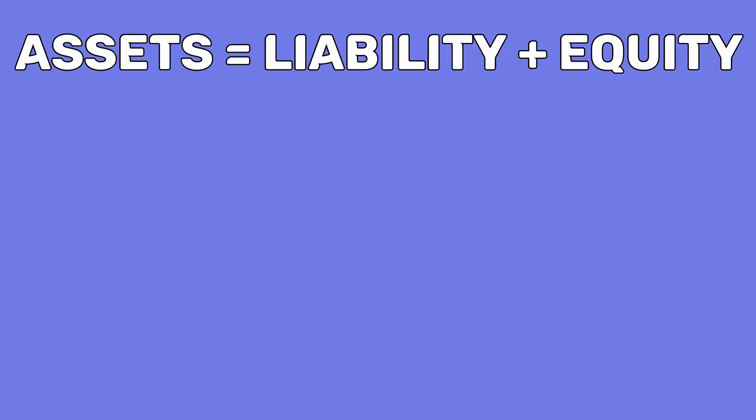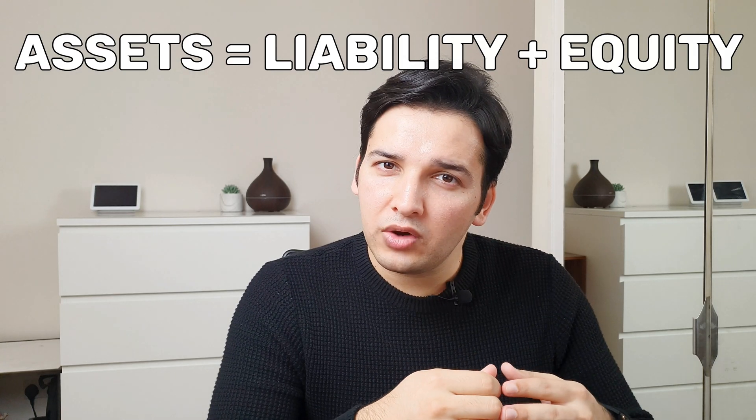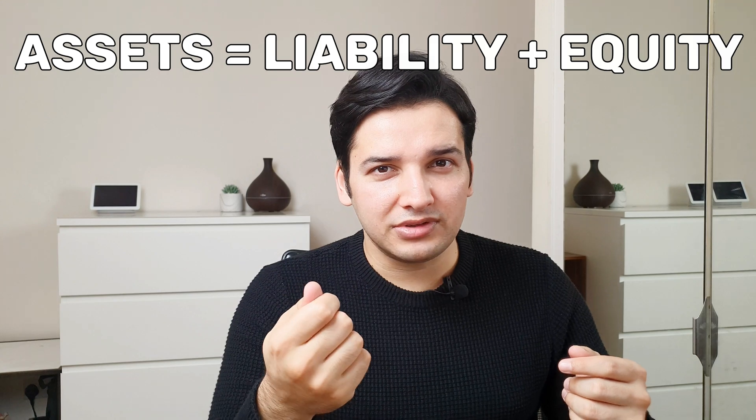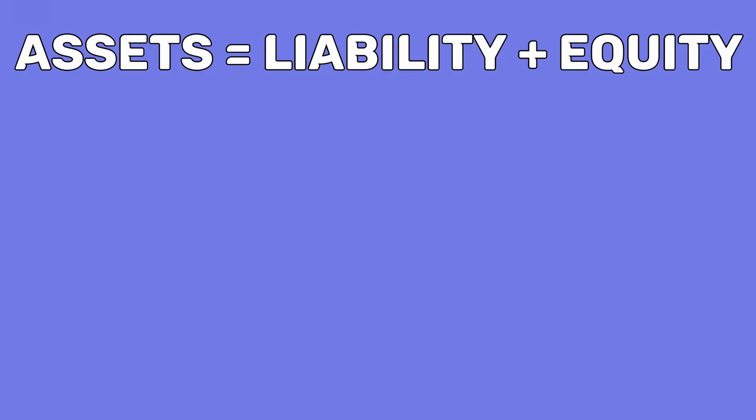Let's take a quick example. When the business was set up, the owner puts in £100 into the company. That £100 is shareholders' capital, sitting in the equity variable — shareholders' capital will be £100. The business has received money, so the bank balance has gone up by £100. Bank balance is in the asset section, so assets equal £100 and shareholders' capital equals £100 in equity. You can see the equation is balancing, and that's the key.